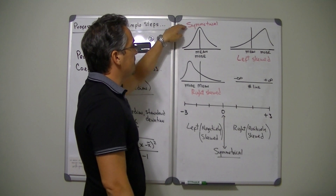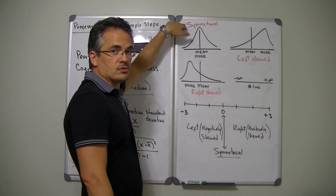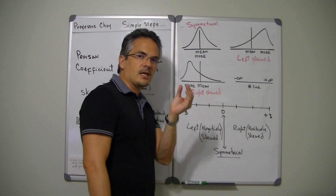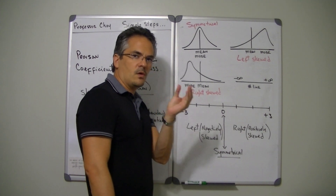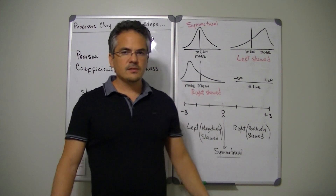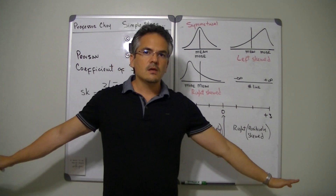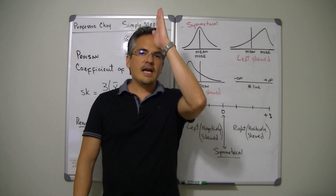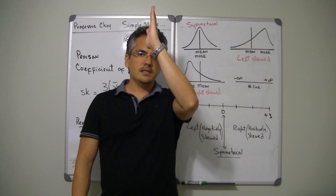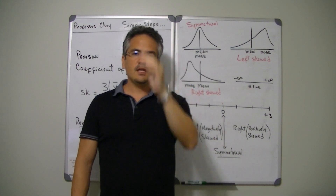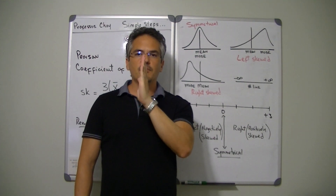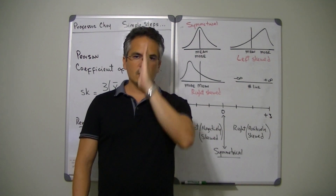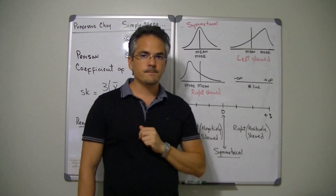You get a symmetrical distribution, which basically means the majority of the data is congregated towards the center, and the tails of the data are lower. The highest frequency of the data is in the center, and the mean, the median, and the mode are exactly in the same position — or very close to each other — in the center of the data.